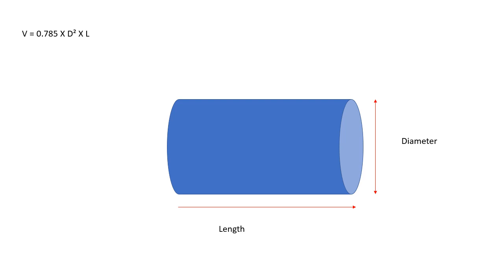Now instead of height, it's going to be length. So the volume of a pipe is equal to 0.785 times the diameter in feet squared times the length in feet. And your answer is going to be in cubic feet.